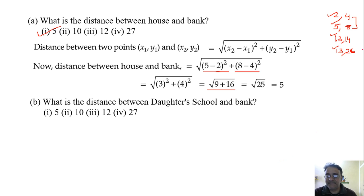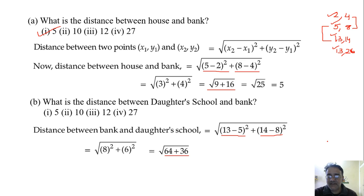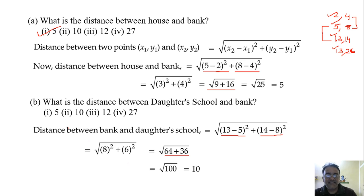Now the second question: what is the distance between daughter's school and bank? Using the distance formula: √((13−5)² + (14−8)²). We get 8² = 64 and 6² = 36. So 64 plus 36 is 100, and the square root of 100 is 10. Final answer is 10 — second option is correct.